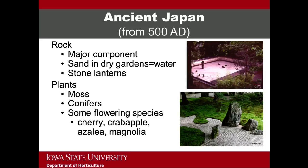Japanese gardens include a limited number of plant species. Some of these species include conifers, which are also associated with symbolism, as well as cherry, crabapple, azalea, and magnolia, often associated with rebirth or awakening since they bloom very early in the spring. The top image on this slide is of the dry garden at the Portland, Oregon Japanese garden. The bottom image shows both a dry garden as well as the moss ground cover.